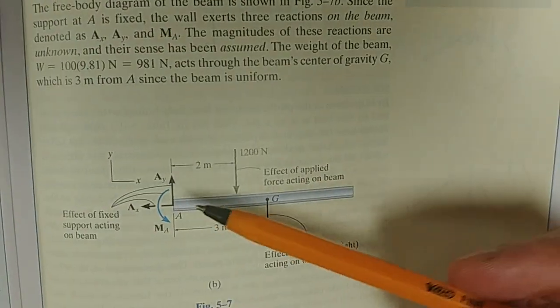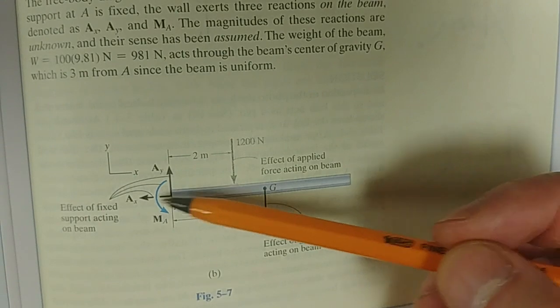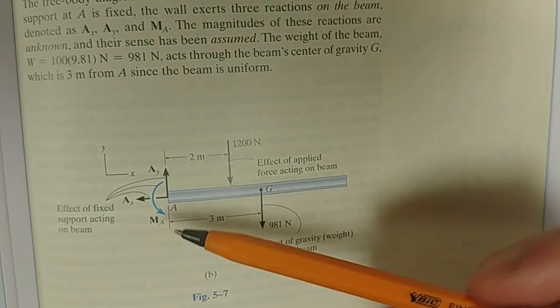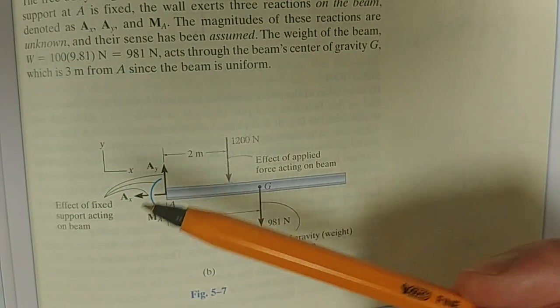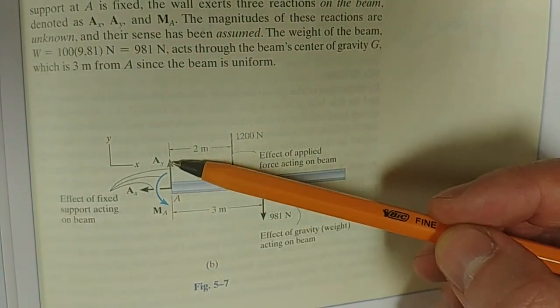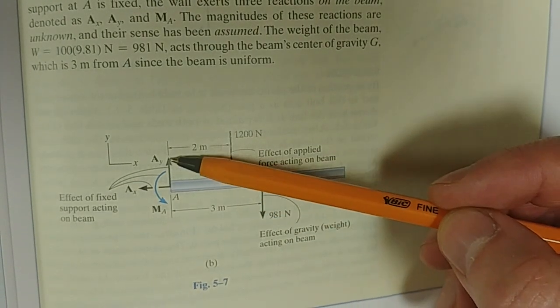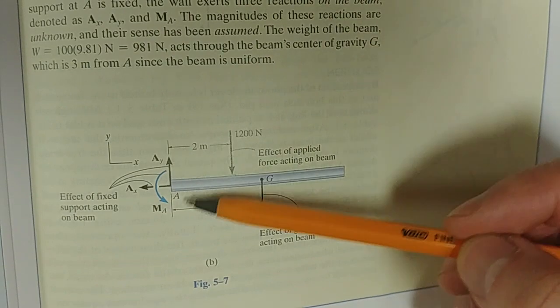Now, the other question you may ask is, how do I know which direction to put that in? Why is it that way and Ax is that way? And why is Ma going counterclockwise? Well, let me tell you, it does not matter. It does not matter which direction you put Ay and Ax. You can put Ay down, Ax to the right, or Ma can be going clockwise.